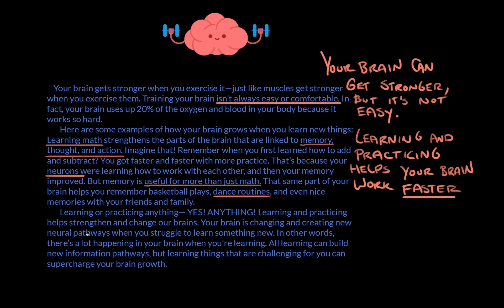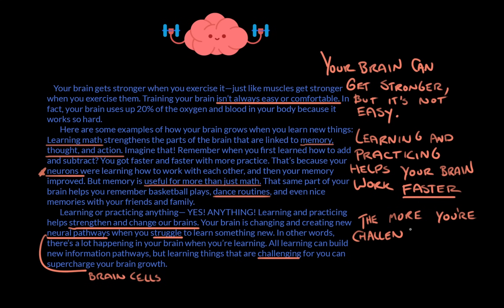Learning or practicing anything — yes, anything — learning and practicing helps strengthen and change our brains. Your brain is changing and creating new neural pathways — which is just another way of saying brain connections — when you struggle to learn something new. Neural is similar to neuron, so it's like having to do with brain cells. So struggle is important. There's a lot happening in your brain when you're learning. All learning can build new information pathways, but learning things that are challenging for you can supercharge your brain growth. In other words, the more you're challenged, the faster you learn.